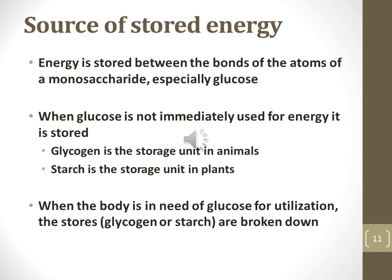Energy is stored between the bonds of the atoms in all monosaccharides, including glucose. Glucose can be stored to be burned for energy later. Animals store glucose in the form of glycogen while plants store glucose in the form of starch. When an organism needs the energy in the glucose, the glycogen or starch is broken down into its monomers and the glucose can be used for energy by breaking it down through cellular respiration.